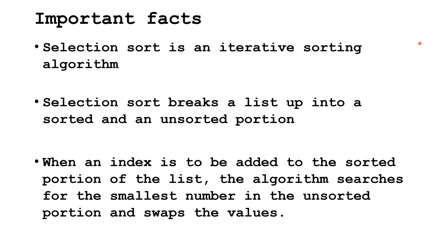Some important facts. Selection sort is an iterative sorting algorithm. Selection sort breaks a list up into a sorted and an unsorted portion. When an index is to be added to the sorted portion of the list, the algorithm searches for the smallest number in the unsorted portion and then swaps the values.